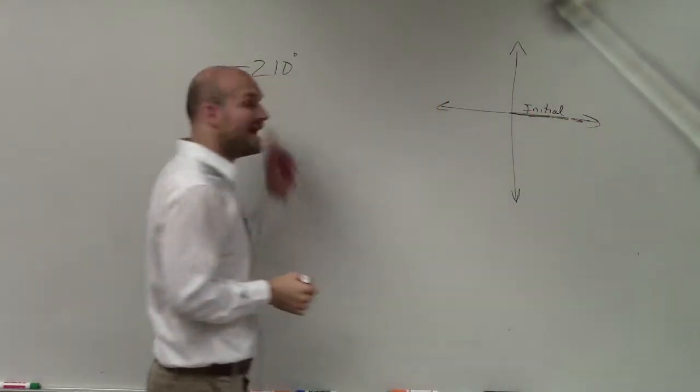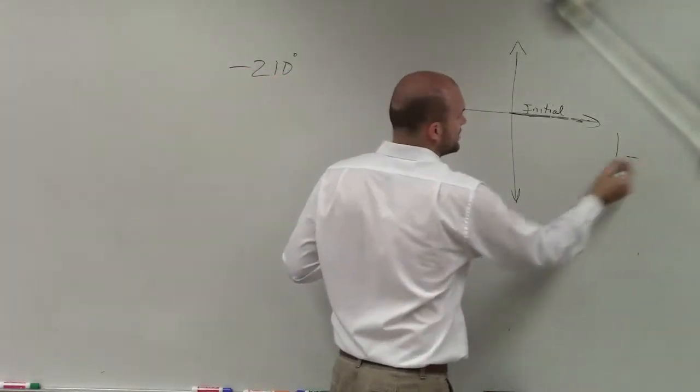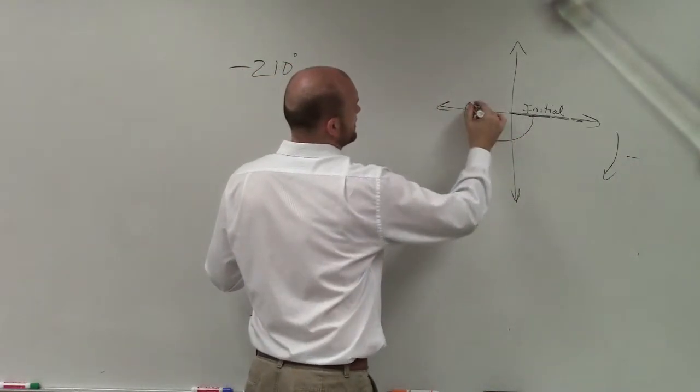Now, since it's going negative, that just means it goes in the negative direction, which is clockwise. So 210 degrees is going to look something like this.